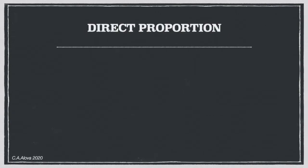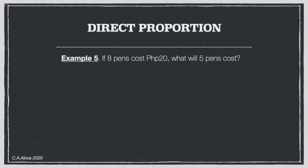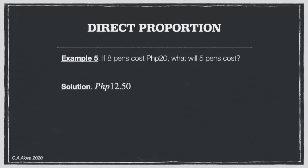Example 5: If 8 pence costs 20 pesos, what will 5 pence cost? We set up 8 is to 20, and 5 is to x. The greatest common factor of 8 and 20 is 4. So 8 divided by 4 is 2, and 20 divided by 4 is 5. We copy 5 and x.